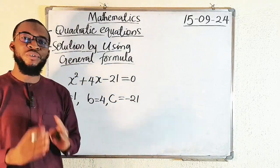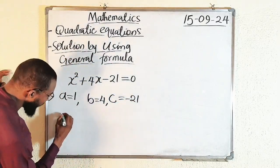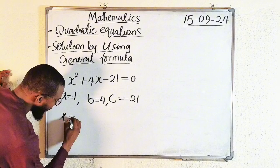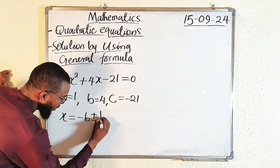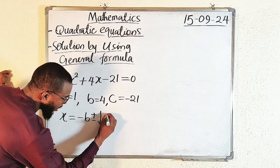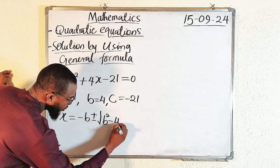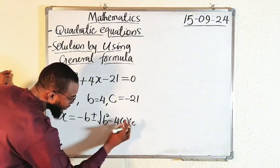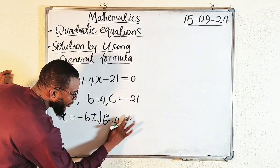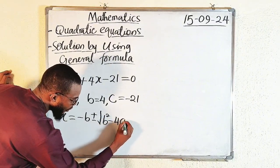Next, you should write the formula. The formula is x equal to minus B plus or minus square root of B squared minus 4 multiplied by A multiplied by C, or you can call it 4AC.